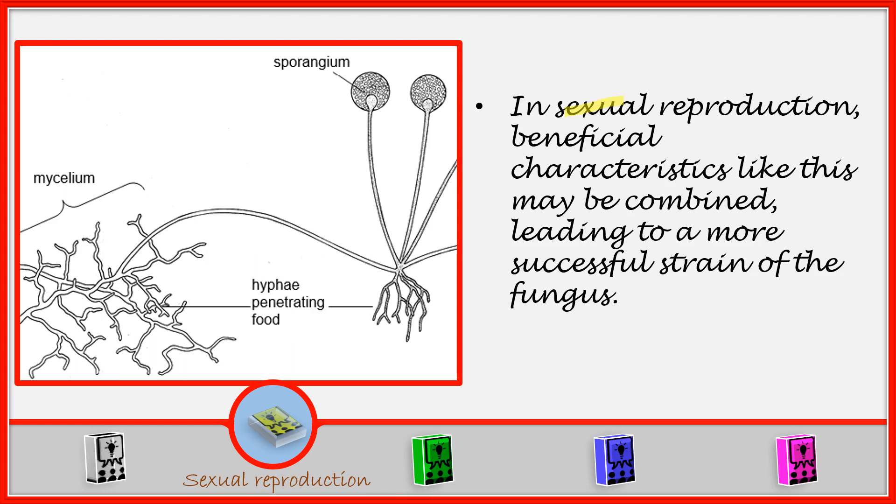Sexual reproduction is beneficial. Genetic characteristics like this may be combined, leading to a more successful strain of a fungus. So one of the advantages of sexual reproduction is the mixing of genetic material which may cause one of the strains that is produced to become a successful strain of a fungus in the environment.